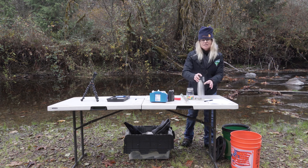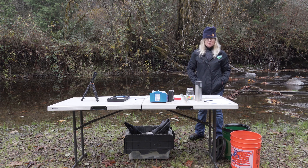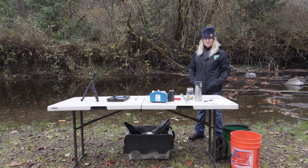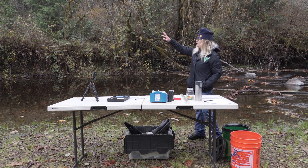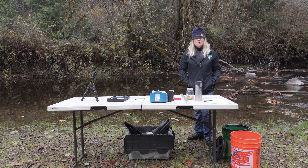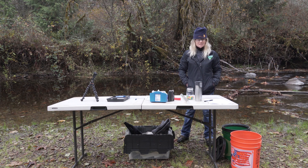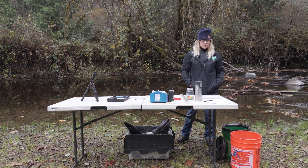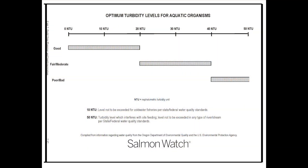So what are some of the things that can change the temperature in a stream? If you look around, you see the trees in the riparian zone — they provide shade. So planting trees in the riparian zone helps with shade.